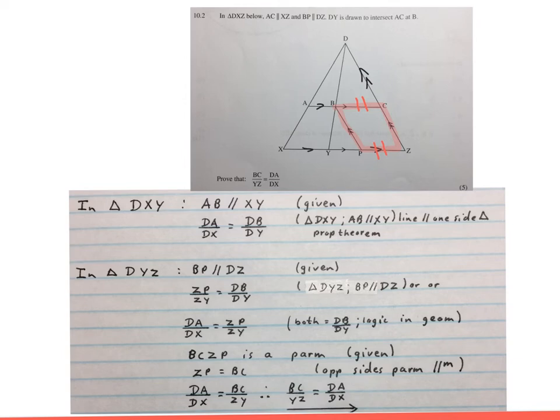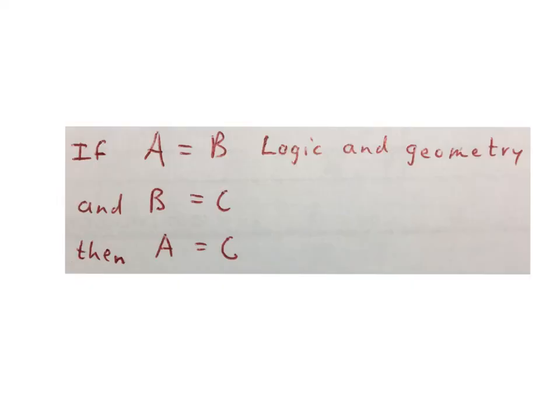Then you can rewrite this ratio as DA over DX is equal to BC over ZY. Then you can stop. I advise my students to always write what they asked us exactly like they asked it at the end. Please stop the video and get your brain around this problem. Please look at the video that says logic and geometry. There we showed you that if A is equal to B and B is equal to C, then A will be equal to C because they both equal to B.